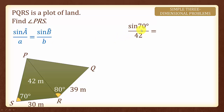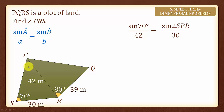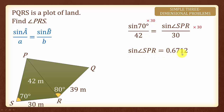Sine 70 degrees over 42 will be equal to — since another length that is given is 30 meters, we will first find angle SPR and hence we will use sine angle SPR over 30. To find angle SPR, we will multiply 30 on both sides, which will give us sine angle SPR equals to 0.6712. Next, we shall inverse sine on both sides, which will give us angle SPR equals to 42.16 degrees.